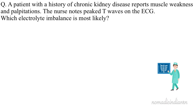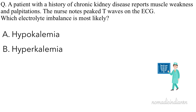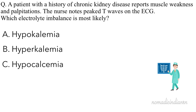A patient with a history of chronic kidney disease reports muscle weakness and palpitations. The nurse notes peaked T waves on the ECG. Which electrolyte imbalance is most likely? Option A. Hypokalemia. Option B. Hyperkalemia. C. Hypocalcemia. D. Hypernatremia.